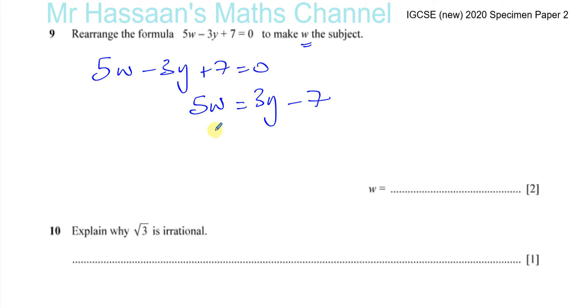And now all I need to do is get rid of this 5, which is multiplying the w, so we have to do the reverse operation to get rid of it. So we have to divide both sides by 5, so w equals 3y minus 7 divided by 5.